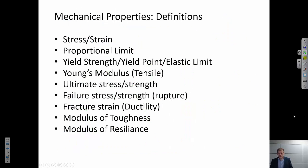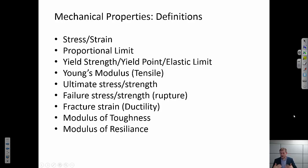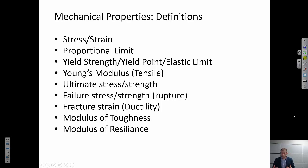In review, we talked about stress and strain, proportional limit, yield stress, yield point, and elastic limit. We talked about Young's modulus, also referred to as Young's tensile modulus. We talked about ultimate stress and strength, failure stress and strength (also called the rupture point), ductility, and finally the modulus of toughness and modulus of resilience.